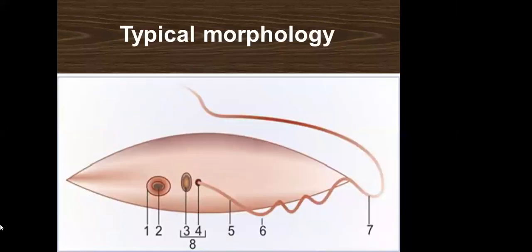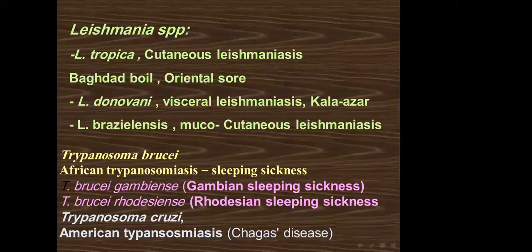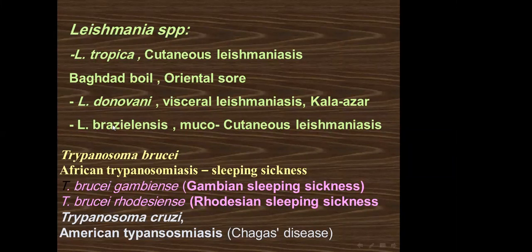The typical shape of the trypomastigote shows a spindle shape, undulating membrane, anterior flagellum, and centrally located nucleus. Leishmania includes three main species: Leishmania tropica, Leishmania donovani, and Leishmania braziliensis. Their morphological stages are the amastigote and promastigote.